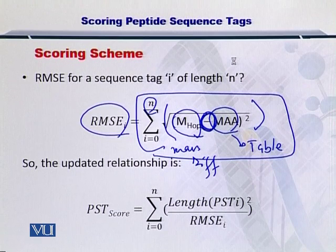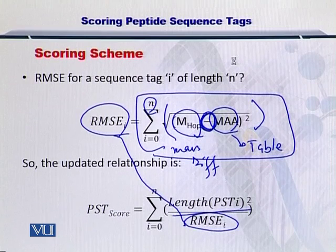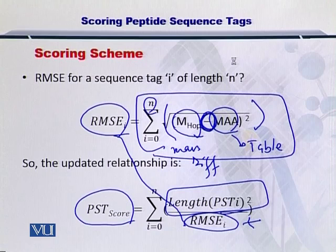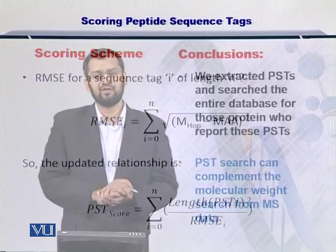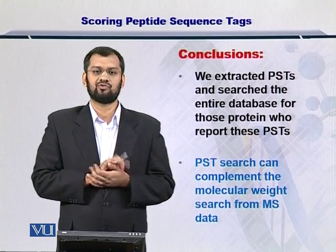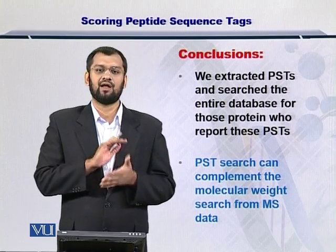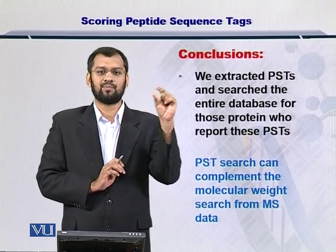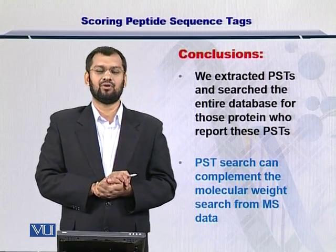Extending the previous scoring scheme that only depended on the length of the PST, you can now incorporate the RMSE by dividing the score of each PST by its RMSE. This means the smaller the RMSE, the bigger the score and the better the match. You arrive at a final PST score that incorporates both the length and the RMSE of the PSTs. We extract these PSTs, search the entire database, compute the overall score, sort the scores, and the protein from the database that is at the top — the top candidate protein — is most probably the protein of your sample.